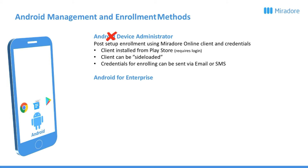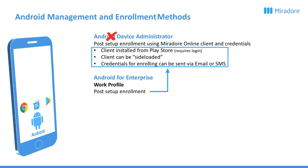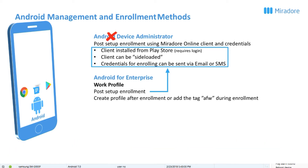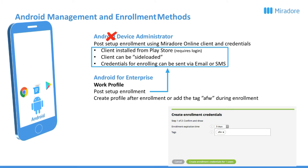Let's have a look at how to enroll your device in Work Profile mode first. This is also a post-setup enrollment, so you have to go through the same steps as the previously mentioned management method. Once the device is enrolled, you can select it in Mirador Online and create a Work Profile on the device. Or, during enrollment, you could add the tag AFW to the device and that will automatically create a Work Profile as soon as the device is enrolled.